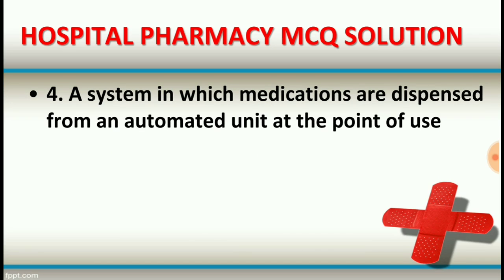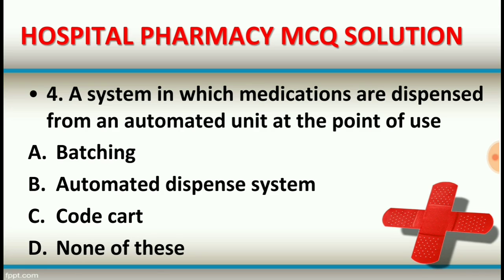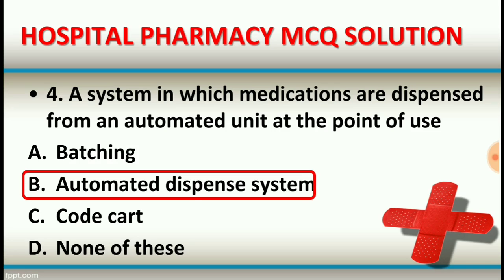Question number four: A system in which medications are dispensed from an automated unit at the point of use. Option A: batching. Option B: automated dispensed system. Option C: code cart. Option D: none of these. The right answer is option B, automated dispensed system.